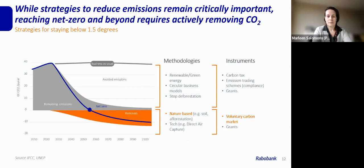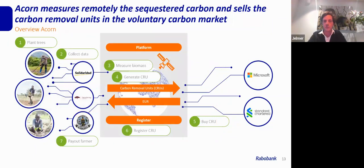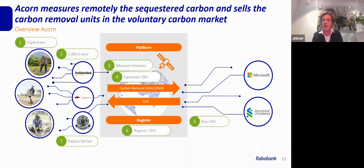How does it work in a nutshell? We hope to reach millions of farmers — let's start planting trees in an agroforestry scheme that always contributes to food production. Local partners collect farmer data and field polygons. Based on that, together with partners, we measure the delta in biomass over the past year. Based on the framework and methodology, we translate this into carbon removal units and sell those to corporates. We register them on the ACORN website and pay out 80% to the farmers, 10% to the local partner, and 10% to ACORN for measuring and marketing carbon removal units. We look forward to scaling this to reach millions of farmers before 2030.